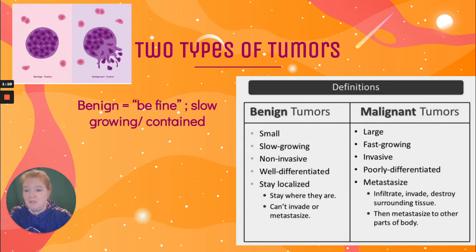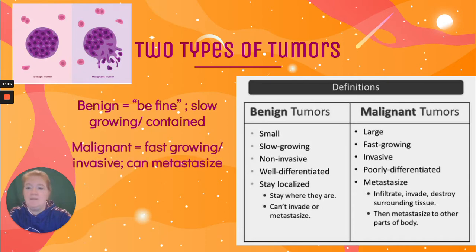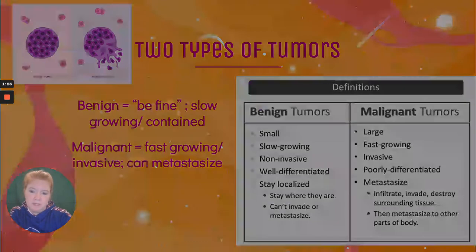So remember: benign — be fine. They're slow-growing and contained. And malignant are fast-growing, invasive, and can metastasize. So if you have results and it shows malignant, that indicates a greater risk.